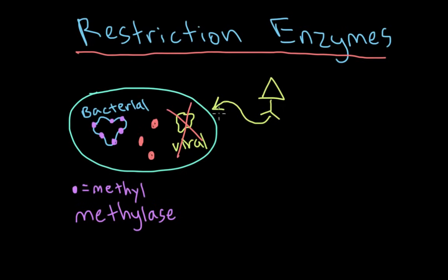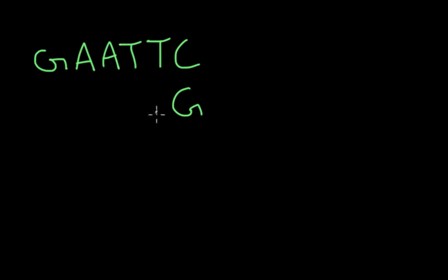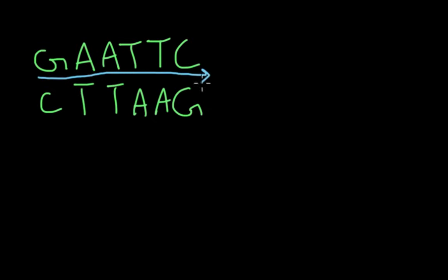In order for the restriction enzyme to work, it needs to recognize a specific sequence — a specific palindromic sequence. If we zoom down to the nucleotide sequence of the bacterial DNA, let's imagine that the sequence was G-A-A-T-T-C. If this was one strand, then the sister strand would be G-A-A-T-T-C as well. If you read the top line from left to right — G-A-A-T-T-C — and you read the bottom strand from right to left — G-A-A-T-T-C — they're basically identical.